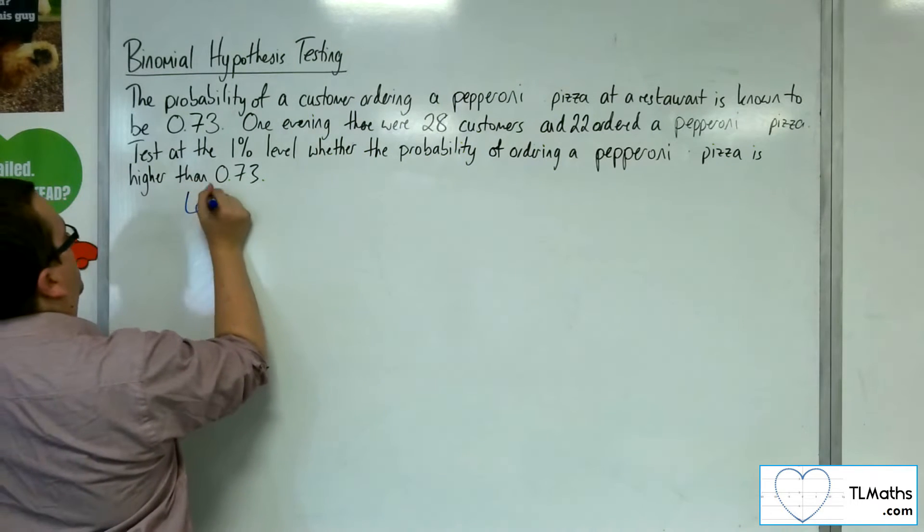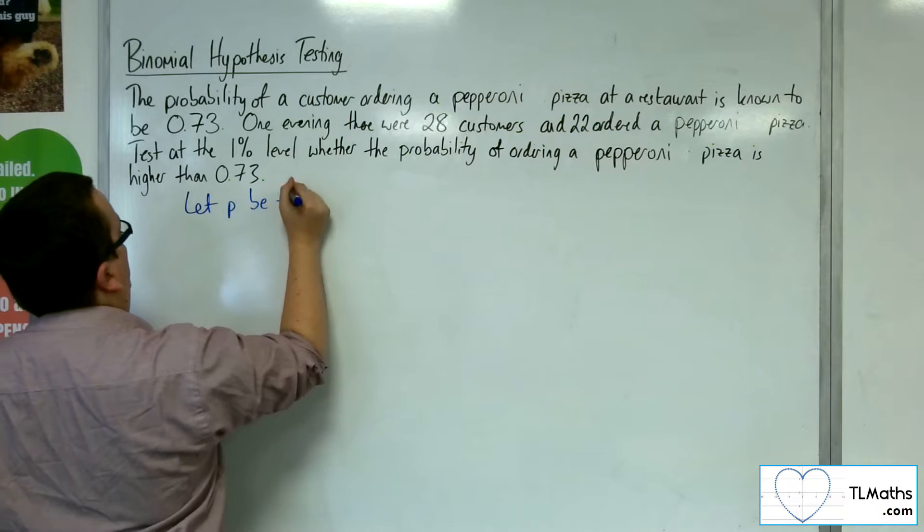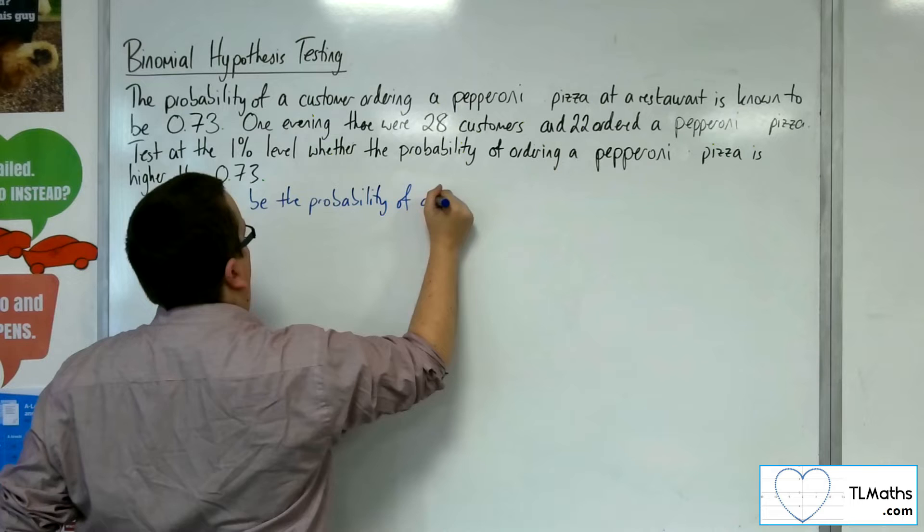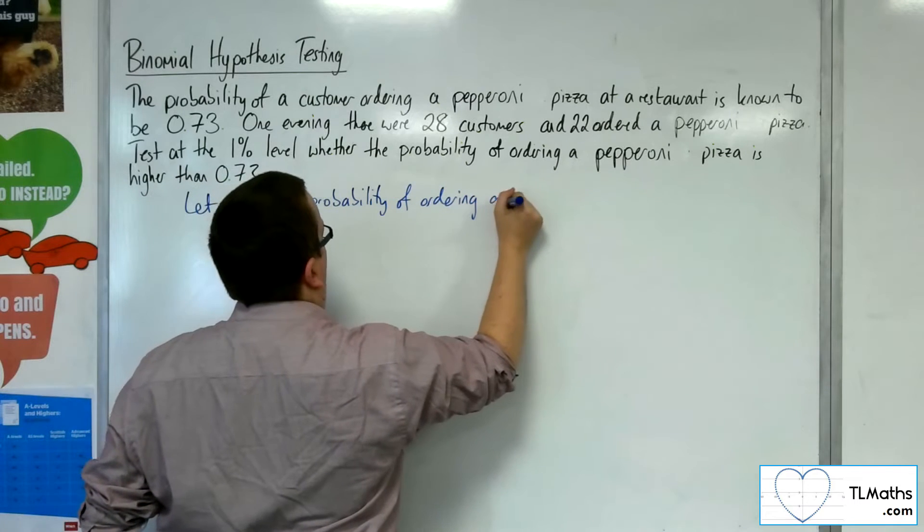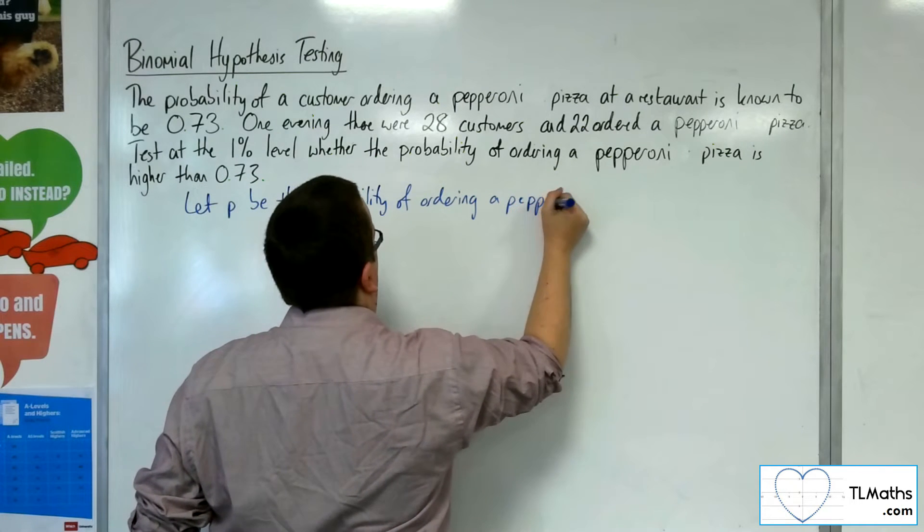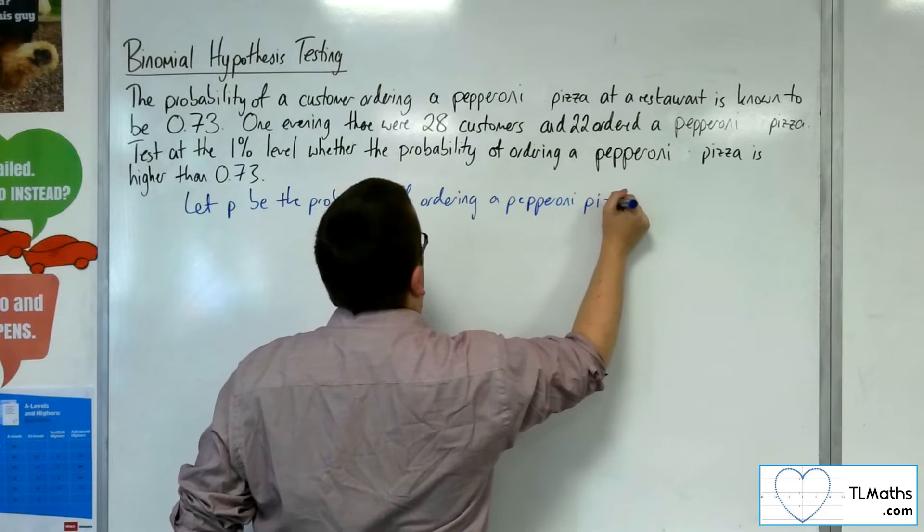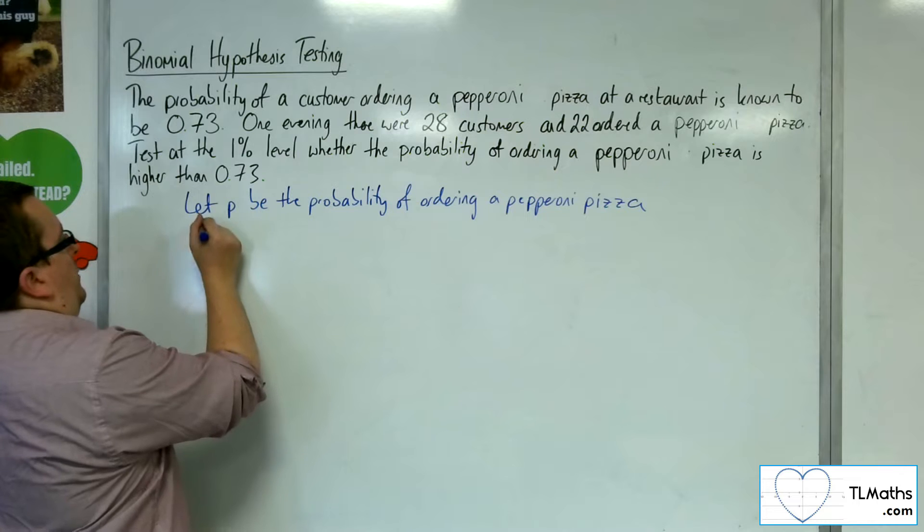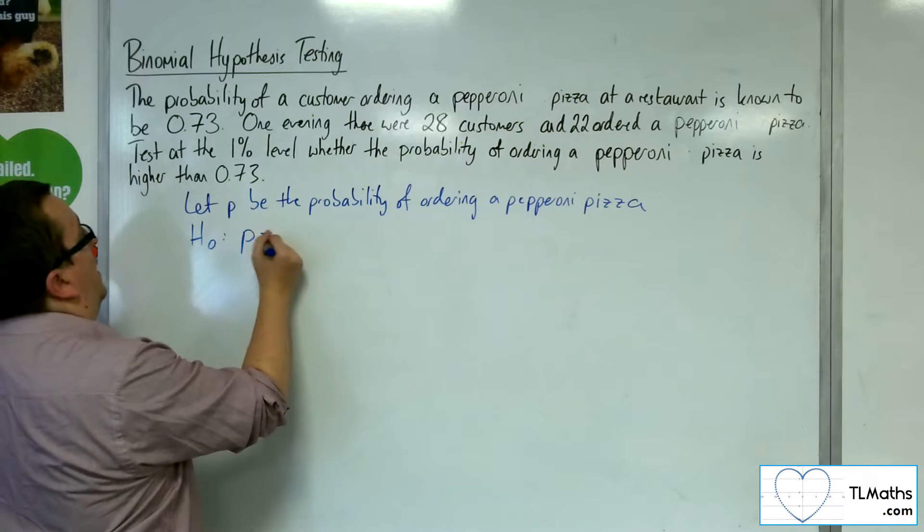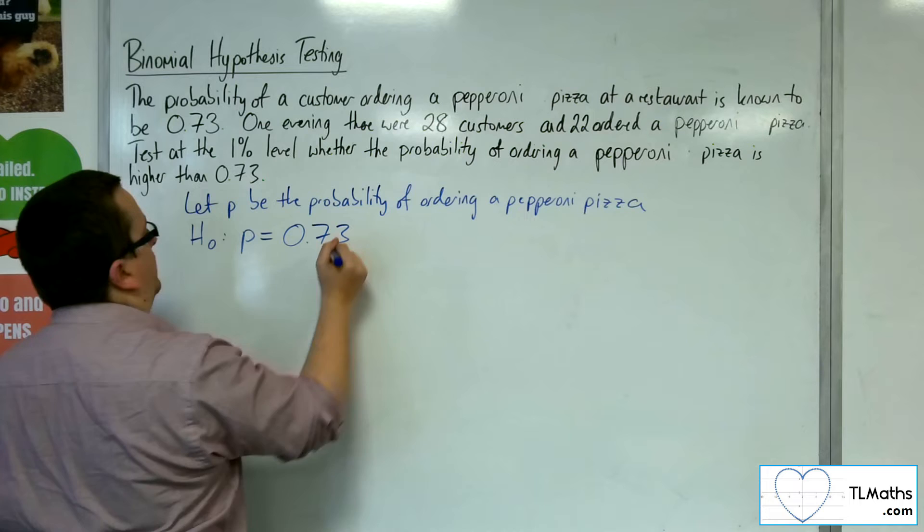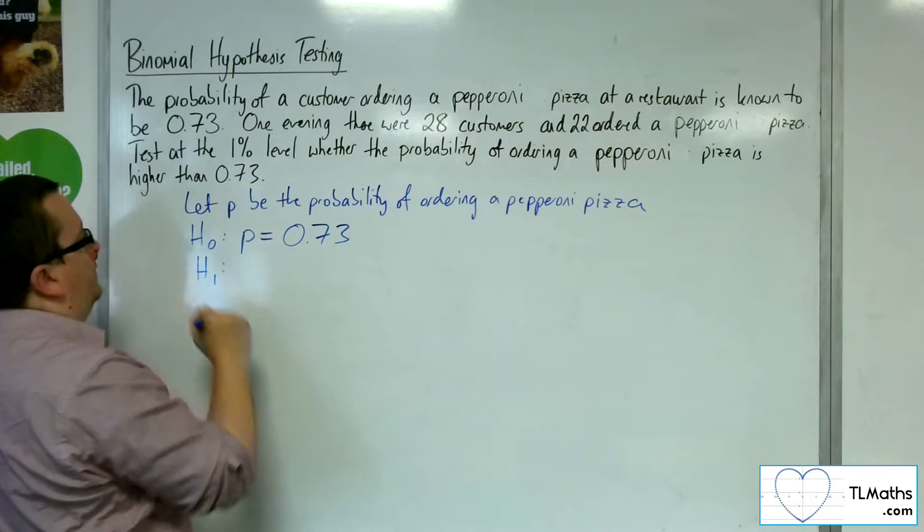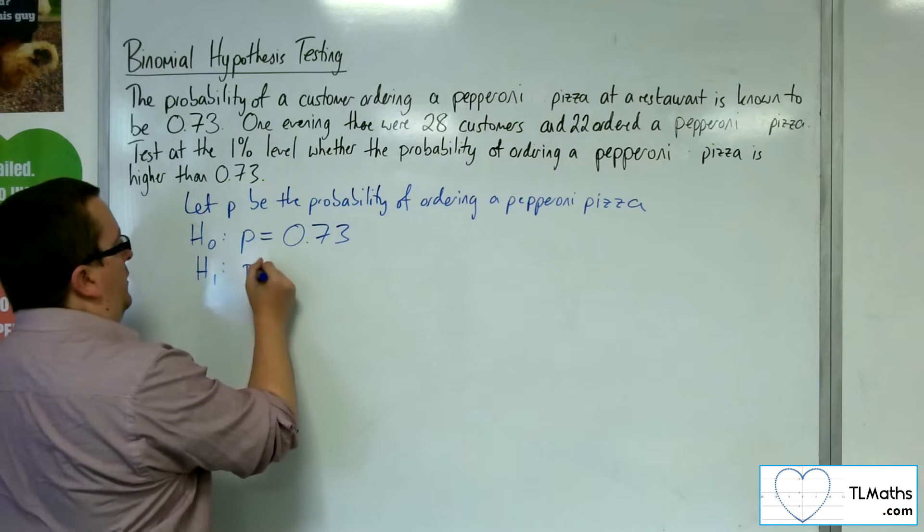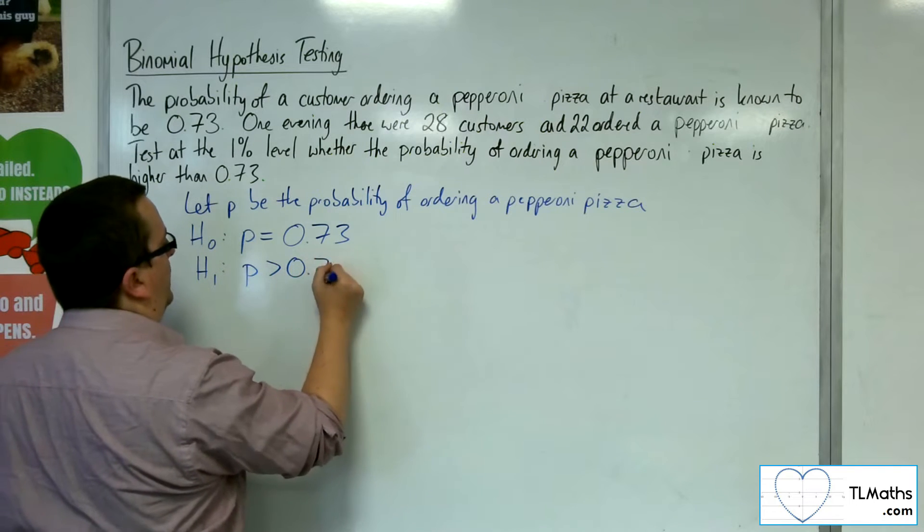We start off with let P be the probability of ordering a pepperoni pizza. The H0, the null hypothesis, is P = 0.73. H1, we're trying to determine whether the probability is higher than 0.73, so H1: P > 0.73.